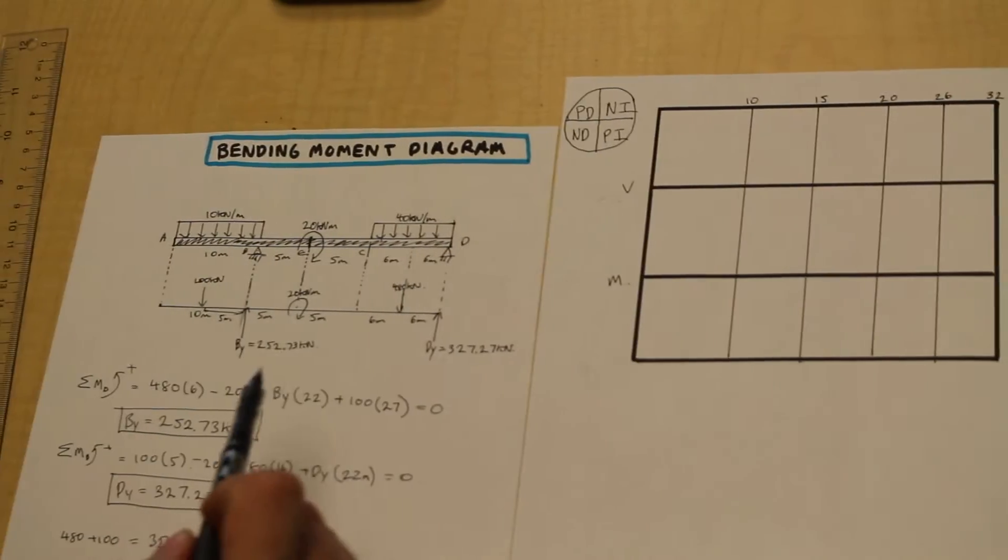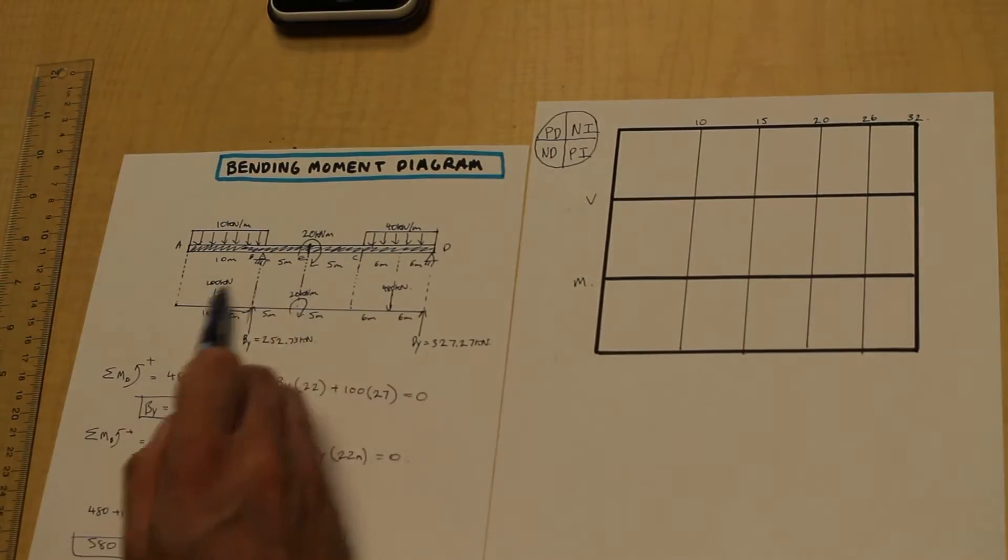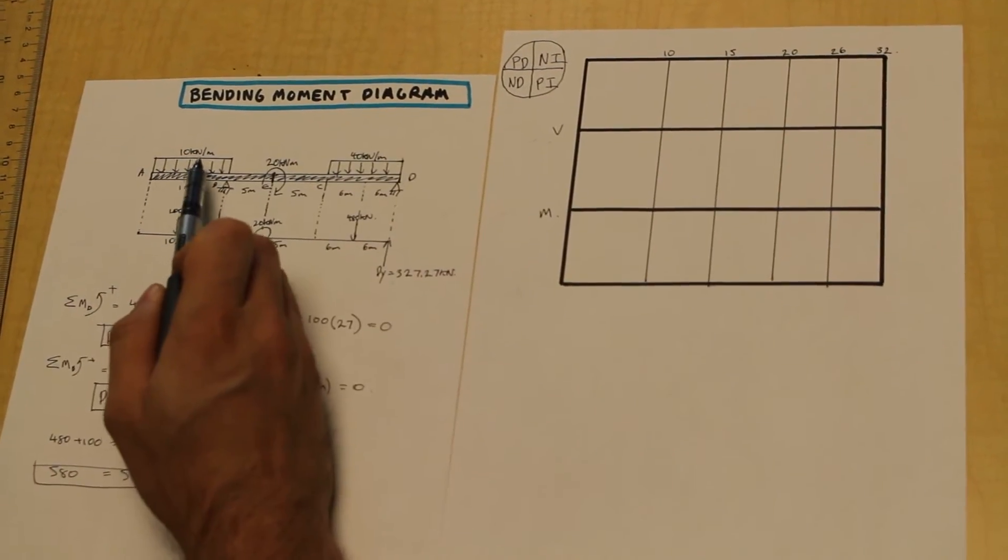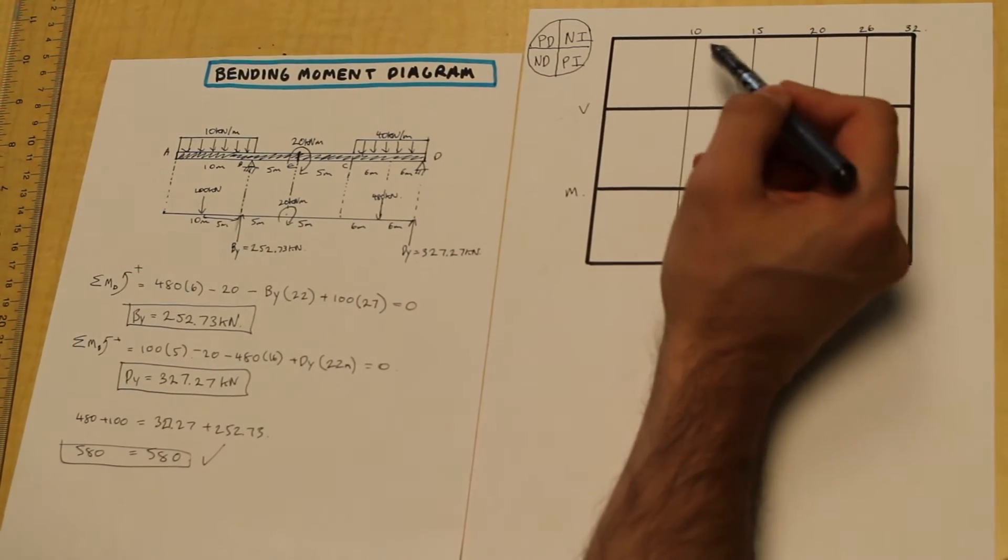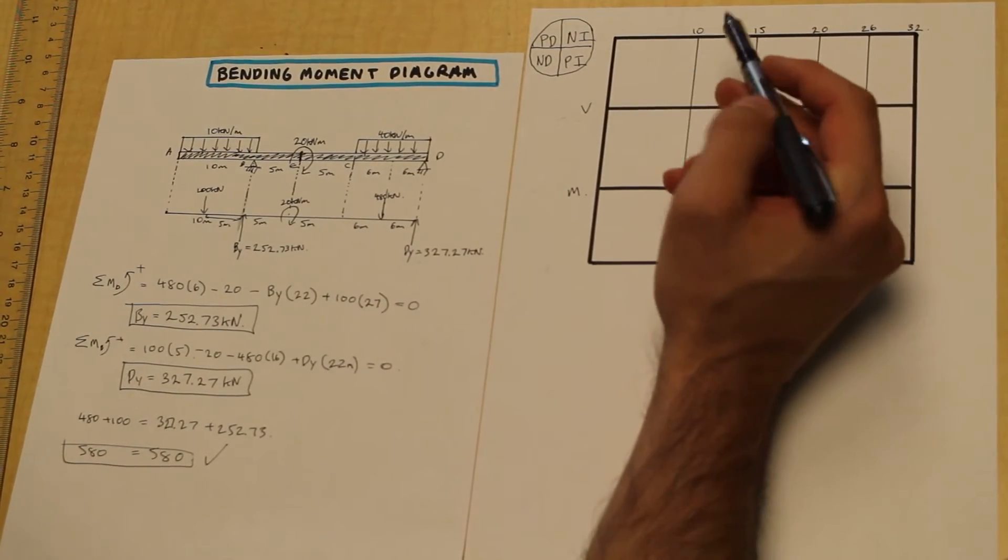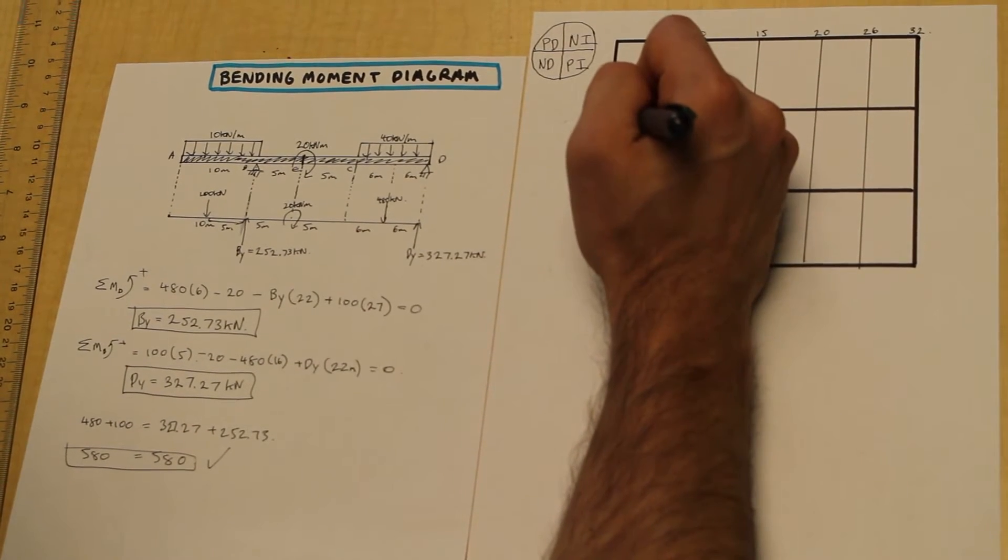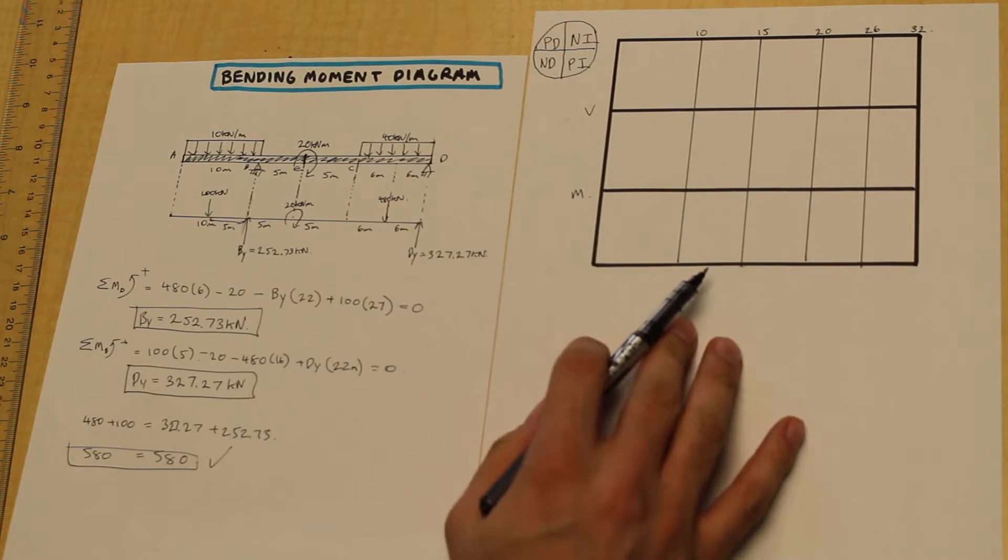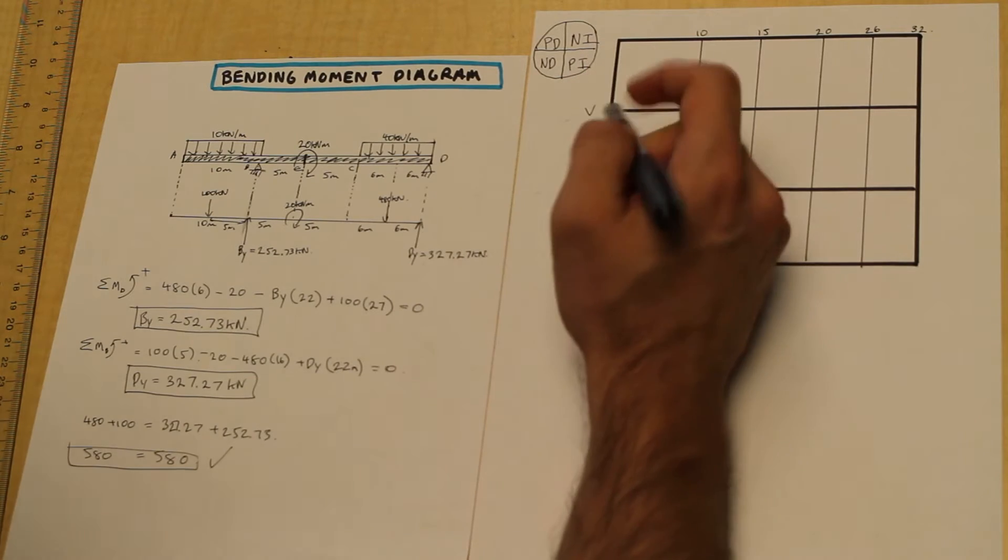So taking a look over here, we should usually draw this by, not necessarily by the free body diagram, but by the original beam diagram, because depending on whether or not it's a distributed load, we're going to have to either draw a linear increase or decrease or a straight line. So let's begin.